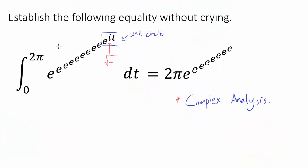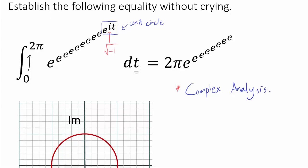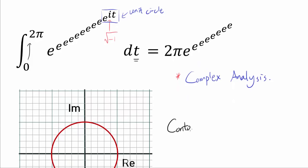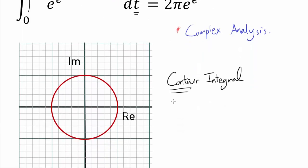So one way of thinking about this integral — one way of thinking about the variable t rotating from 0 to 2π — is to think of the integral as a contour integral. And the contour, in this case, is just a path. Our path is the unit circle. So we're integrating along the unit circle as t rotates from 0 to 2π. Let's call this entire unit circle gamma, so this entire contour is gamma.